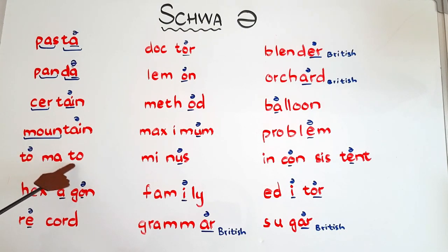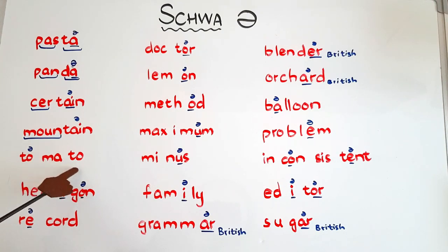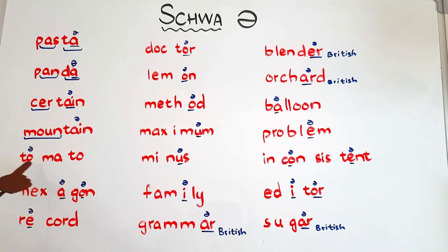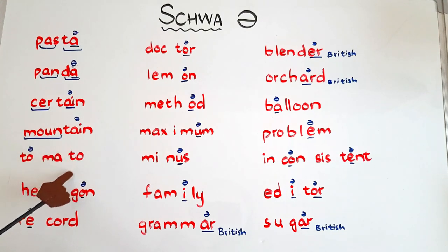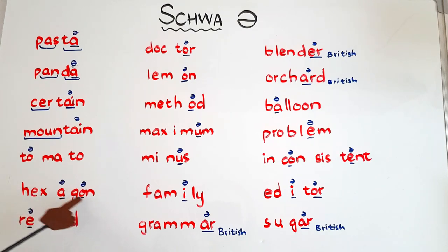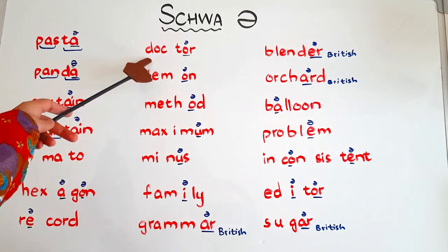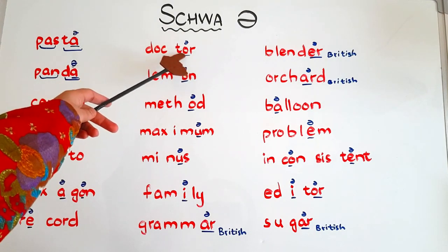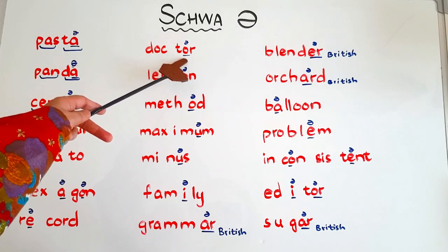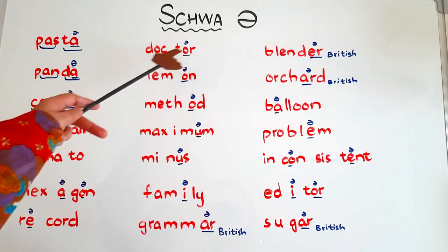This word is 'tomato' or 'tomato' — both pronunciations are correct. 'Tomato' is British and 'tomato' is American. The first syllable has the schwa sound. In this word we have one schwa and two full vowel sounds. The next word is 'hexagon' — here we have two schwas: the 'a' and the 'on.' 'Hexagon.' 'Record' — the first vowel is schwa. 'Doctor' — the 'or' makes the schwa sound, and in British pronunciation it will be 'doctor' without the 'r' sound.